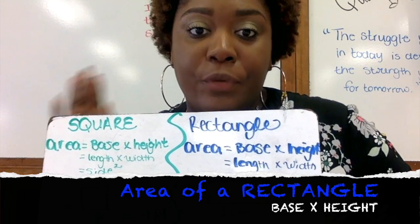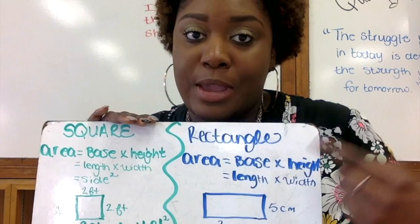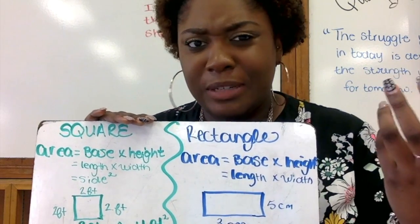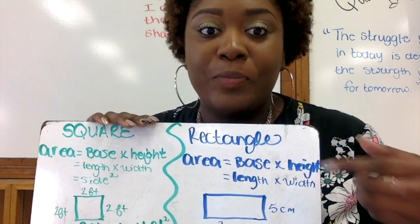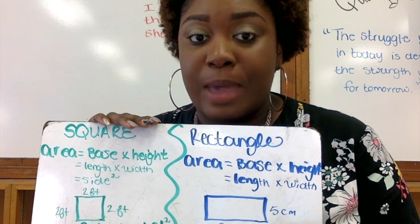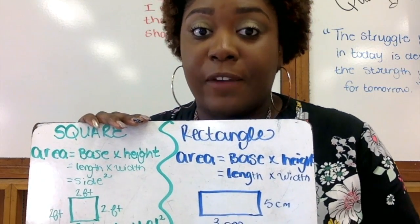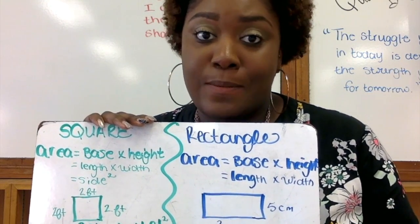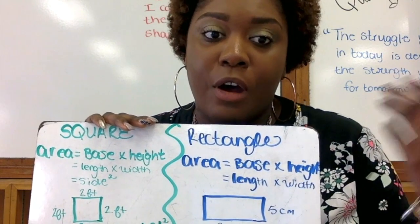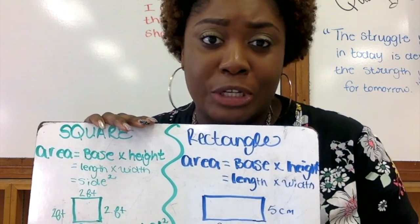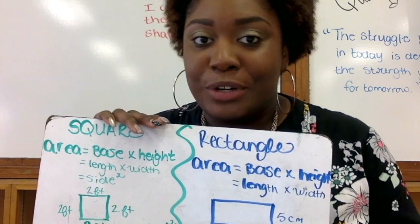For the rectangle example, we have three centimeters as our base and five centimeters as our height. To find the area, we do three centimeters times five centimeters, which gives us 15 centimeters squared. We add 'squared' to our measurement because we are multiplying two different measurements together.